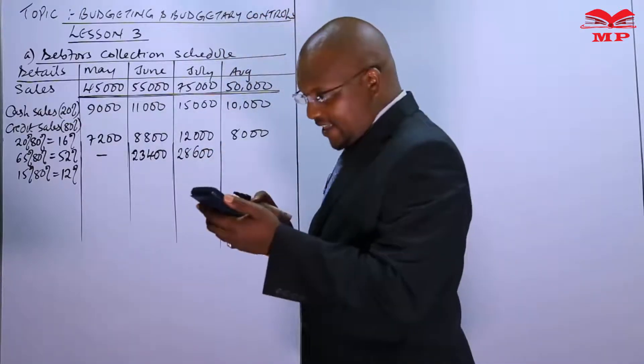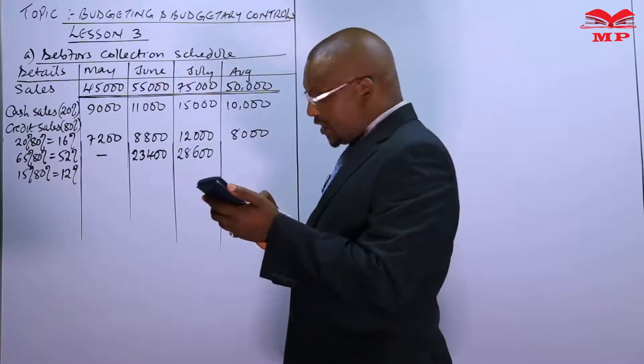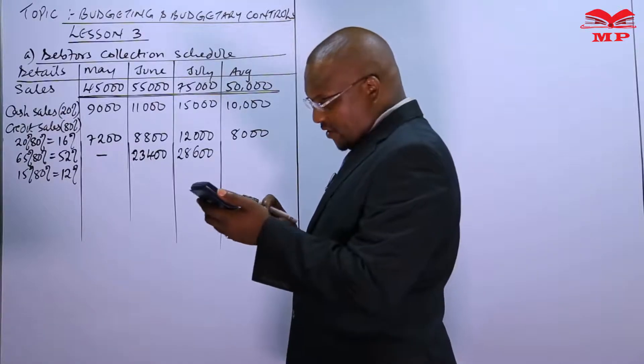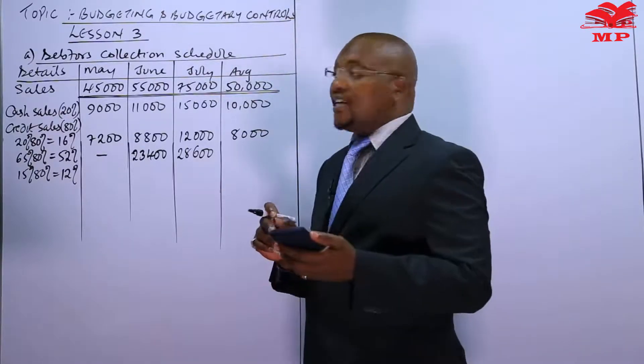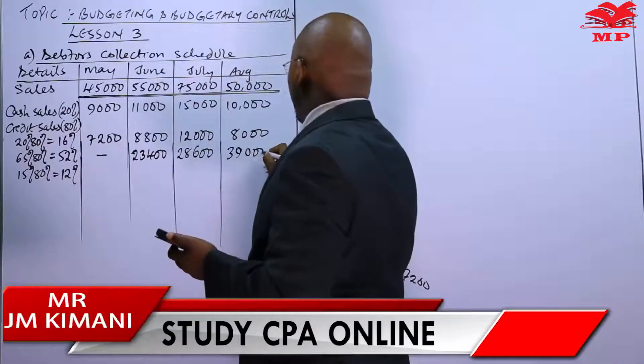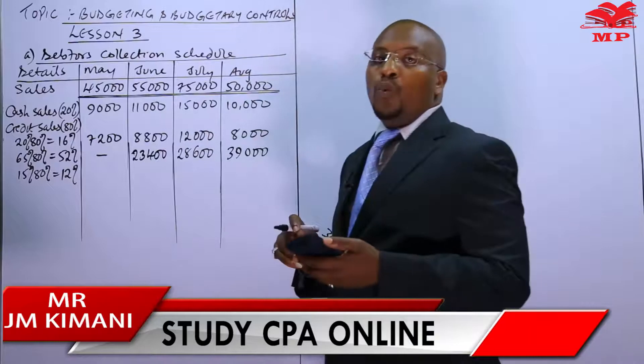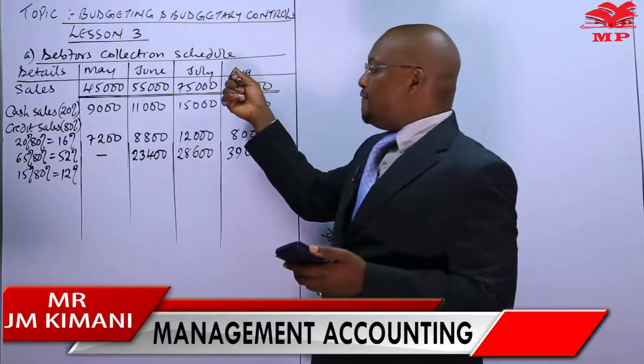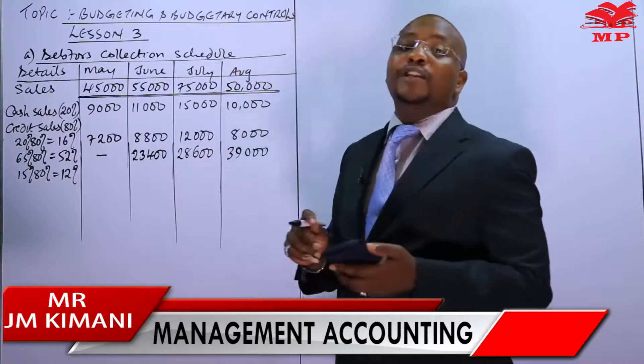Then 0.52 times 75,000 in the month of July to be collected in the month of August, this is 39,000. So meaning by the end of August we will not have collected the 52% of this 50,000.